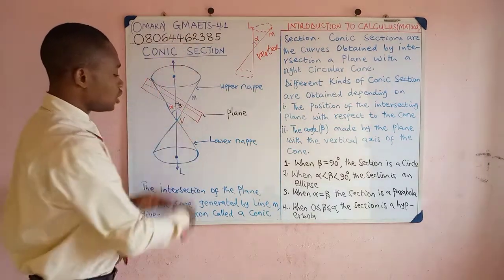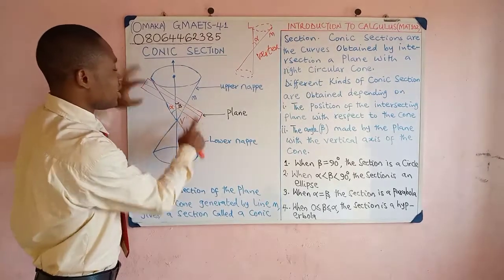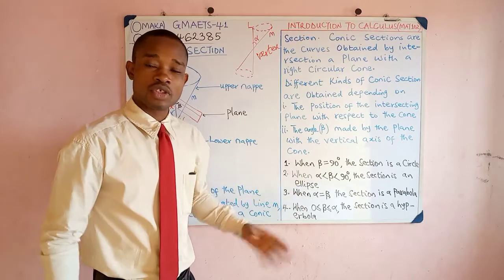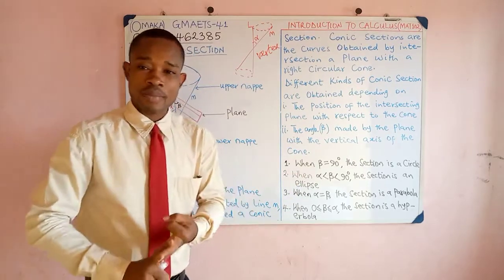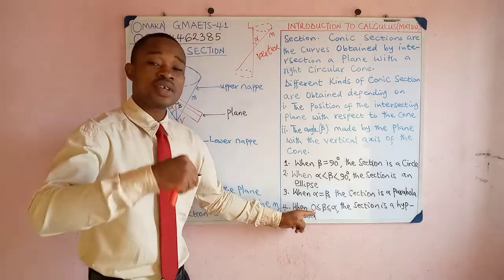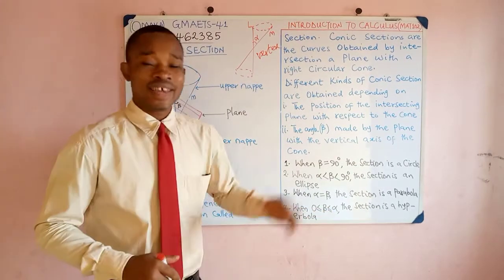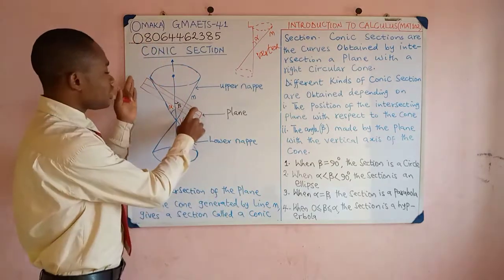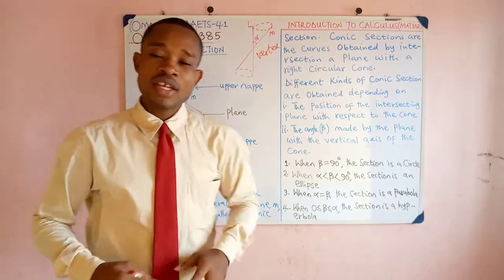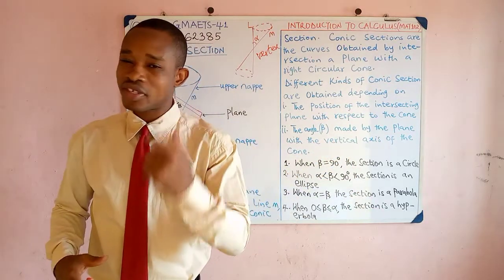We have the upper nappe and the lower nappe. If this plane intersects with only one of the nappes, then one of these three kinds of conic sections will be formed: the circle, the ellipse, or the parabola. Now for the hyperbola, that's when zero is less than or equal to beta and beta is less than or equal to alpha. That happens when this plane intersects with both nappes — the upper and lower nappe. In the next video, we are going to start analyzing these different kinds of conic sections, starting with the circle.